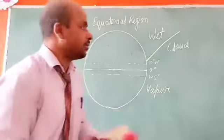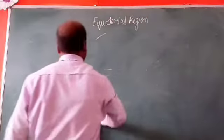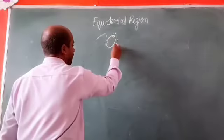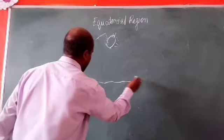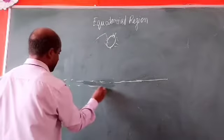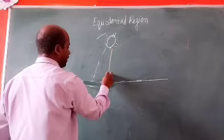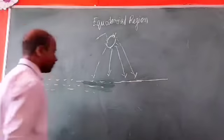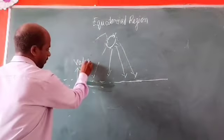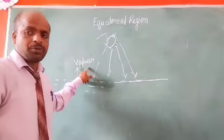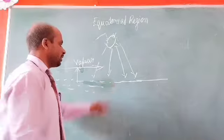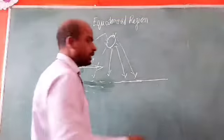We can understand this by a diagram. Here, the sun is shining on the equatorial region. This is the land part and this is the water bodies. The sun shines directly on the water, which becomes warm and changes into vapor. The vapor rises into the atmosphere, condenses, and the wind carries the moisture towards the land, changing the land's climate to humid.